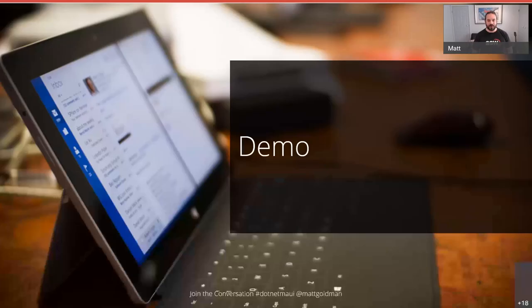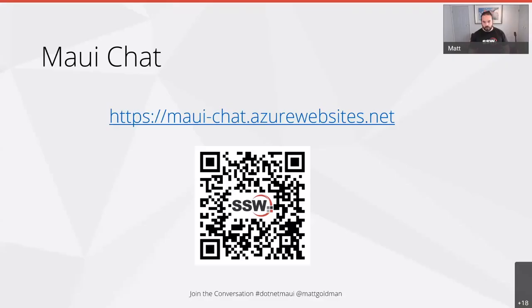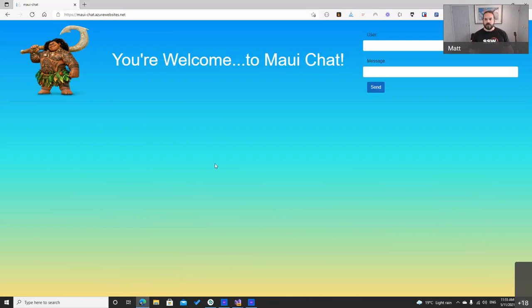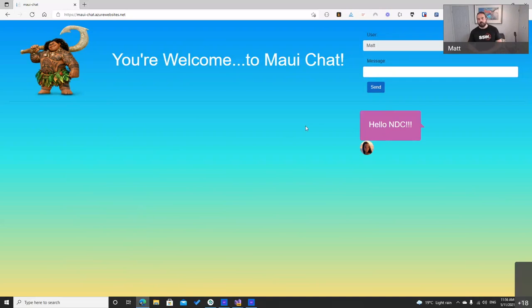Demo time. I have a demo running called MAUI Chat that you can join at https://maui-chat.azurewebsites.net or by scanning the QR code. Let me send a message: 'Hello NDC.' This is a Blazor application running with a .NET Core backend.